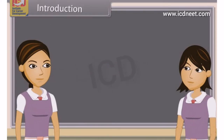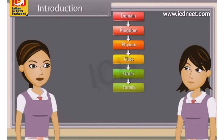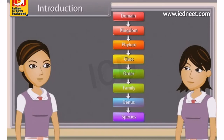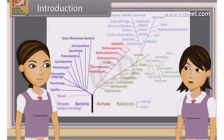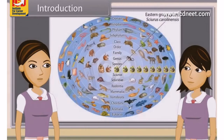Biological classification, or scientific classification in biology, is a method by which biologists group and categorize organisms by biological type, such as genus or species. Modern biological classification has its roots in the work of Carolus Linnaeus, who grouped species according to shared physical characteristics. These groupings have since been revised to improve consistency with the Darwinian principle of common descent.